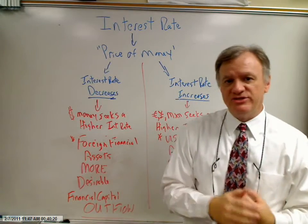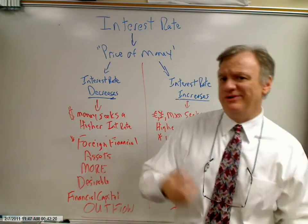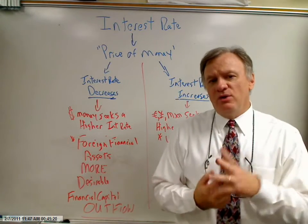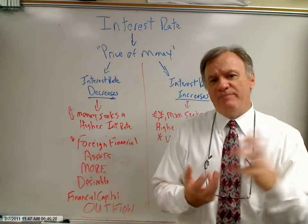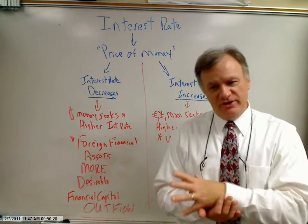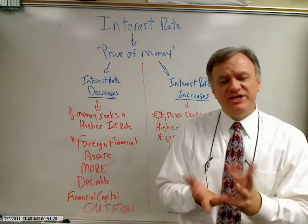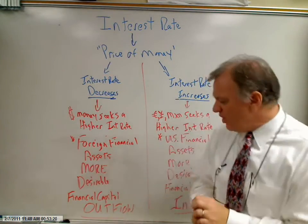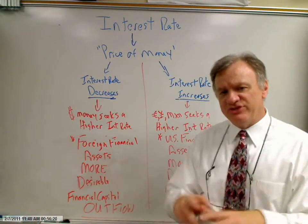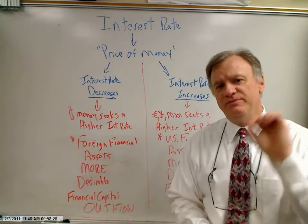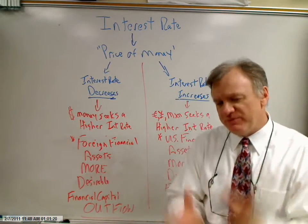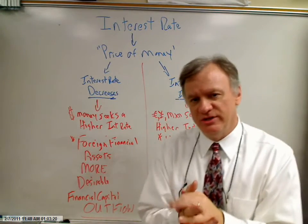Sometimes that might be in the United States, or it might be in Europe, or it might be in China, or Japan, or somewhere else. But we want to look at what happens when interest rates from one country relative to another change — how does that affect the flow of financial capital? Financial capital, again, is the surplus savings that individuals, businesses, and governments have, but want to put somewhere where it's going to grow the largest.